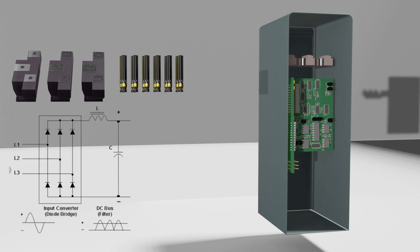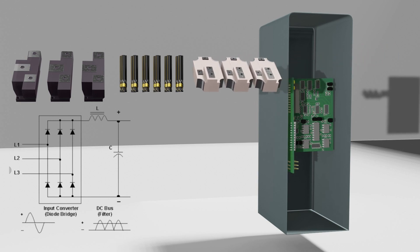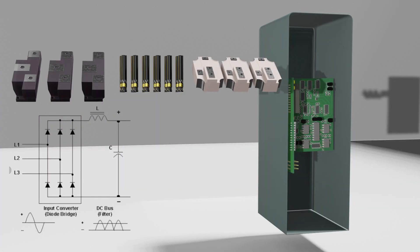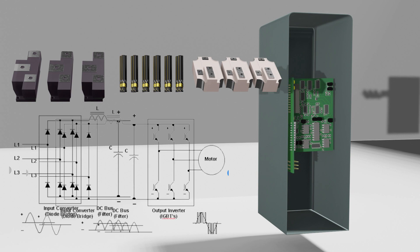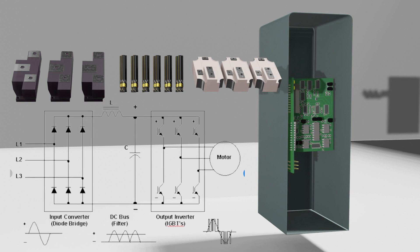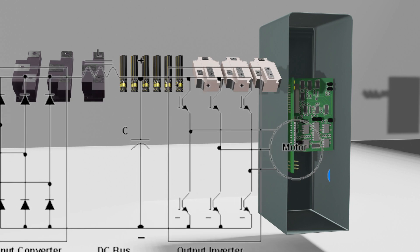Then after, the third component is the inverter module, which consists of IGBT devices and converts DC supply into AC supply. The output of this inverter module will directly go to the induction motor. The symbolic representation of the inverter module looks like this. The DC supply comes directly to this inverter module, and from all 3 limbs, each phase is taken out, which acts as the 3-phase AC output of the VFD. This VFD output will directly feed the induction motor through the cable, as you see here.